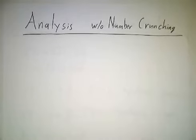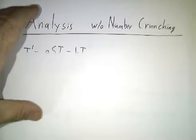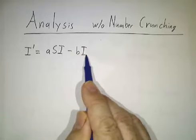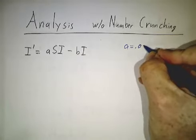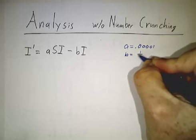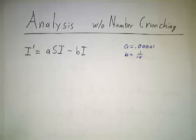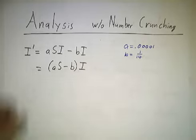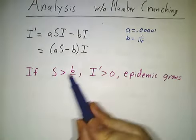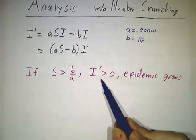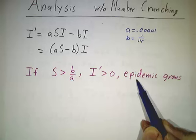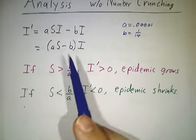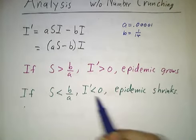Now we can also do some analysis without any number crunching. Let's look back at the equation for I. The rate at which I is changing is ASI minus BI, where in this instance, A was 0.00001 and B was 1/14th. We can factor out the I and say that it's (AS minus B) times I. You notice that if S is bigger than B/A, this is positive, and that means that the epidemic's growing. But if S is less than B/A, then the rate of change is negative. The epidemic is shrinking.